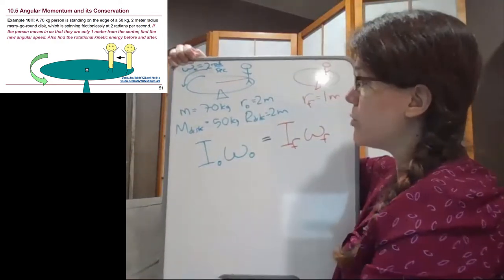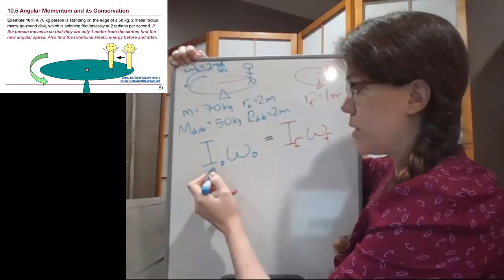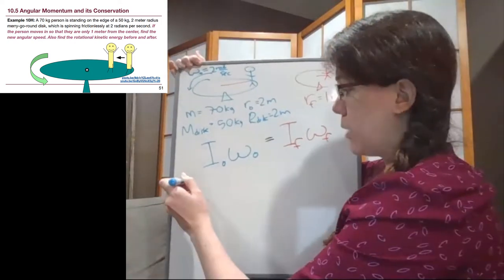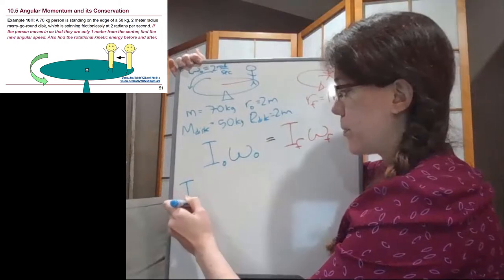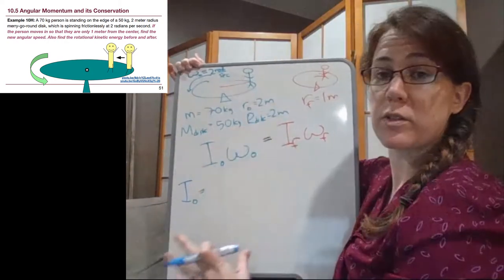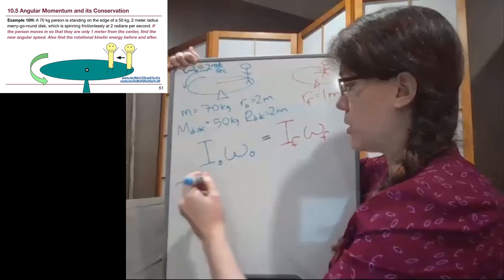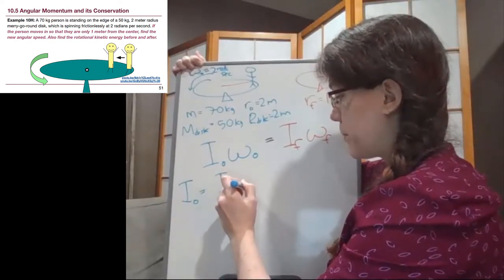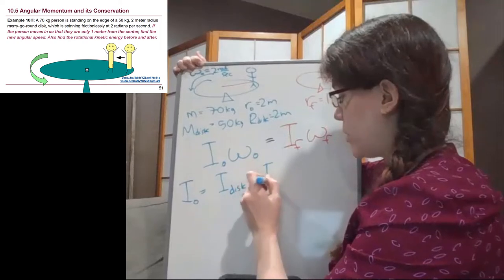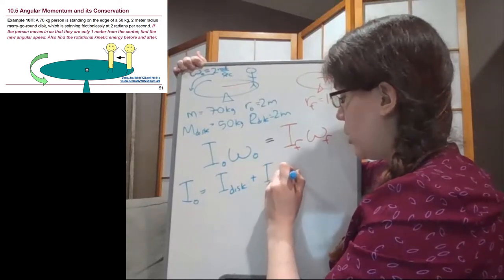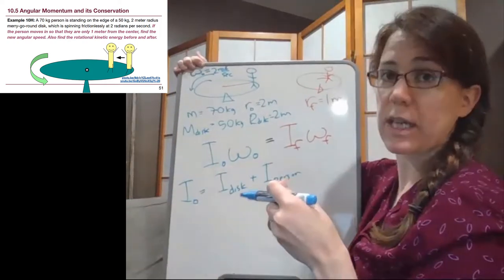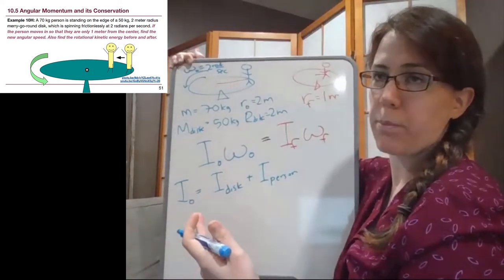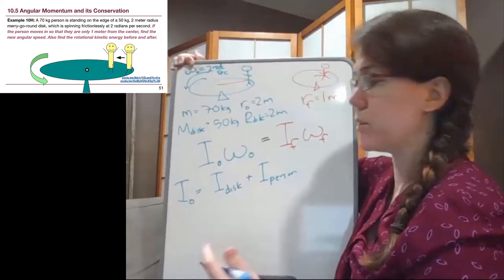So what we need to do then is we need to realize that this moment of inertia is one that we can calculate with the information that we have. The moment of inertia of the entire system has two separate components to it. It's the moment of inertia of the disc plus the moment of inertia of the person who is acting like a mass on a stick, a mass a certain distance away from the center, kind of like the particle that showed up in one of the lecture slide figures.